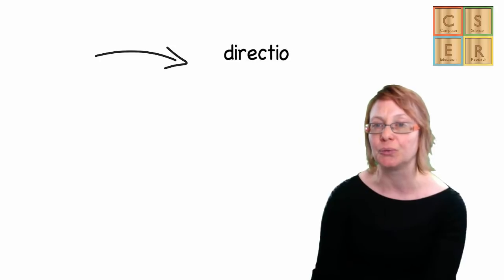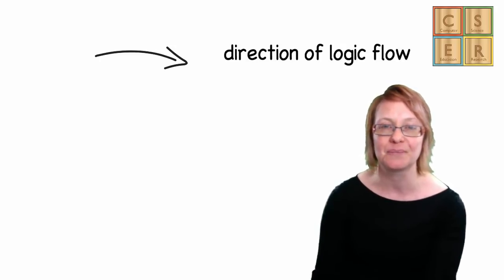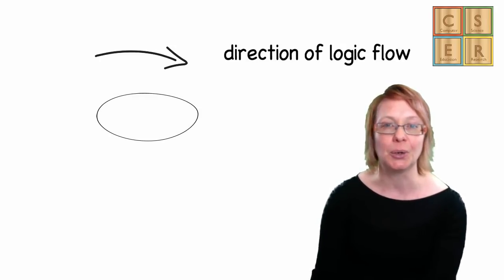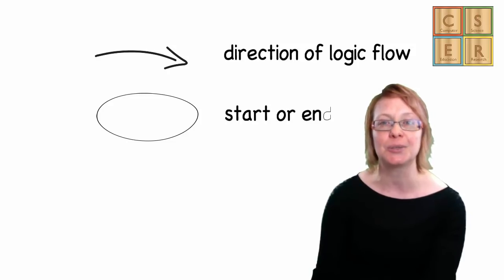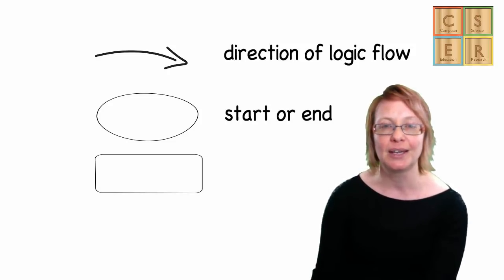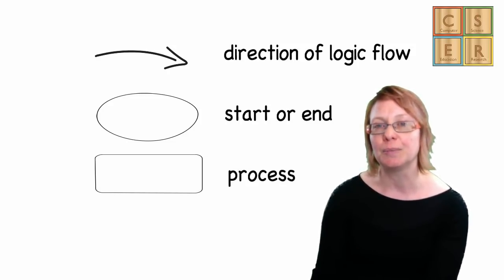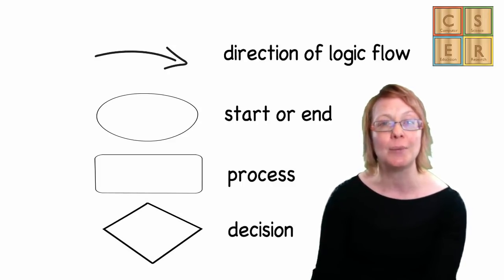The first symbol we will use is the arrow, which tells us the direction of logical flow through our flowchart. The second symbol is the oval, which is used to represent the start or end state of our algorithm. Next is the rectangle, which represents a process. And finally is the diamond, which represents where we make a choice.